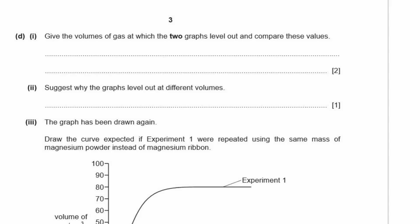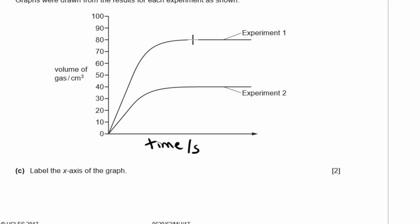D1, give the volumes of gas at which the two graphs level out and compare these values. Alright, for experiment one, it levels out. Nice straight line, looks like it's going about to the 80 centimeters cubed mark. And for experiment two, nice straight line, looks like it's going to the 40 centimeters cubed mark. Alright, so experiment one levels off at 80 centimeters cubed, experiment two levels off at 40 centimeters cubed. You're asked to compare them.